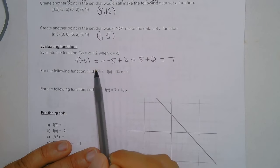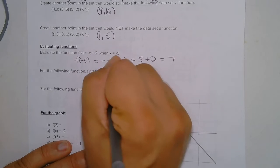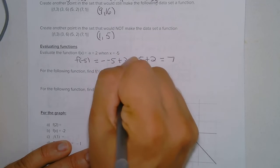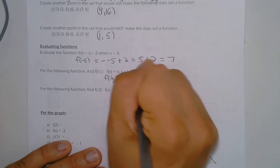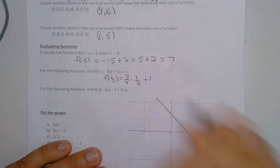So now we're going to evaluate this function if x is 1 third. So f of the function x, f of 1 third, is 3 over 4 times 1 over 3 plus 1.